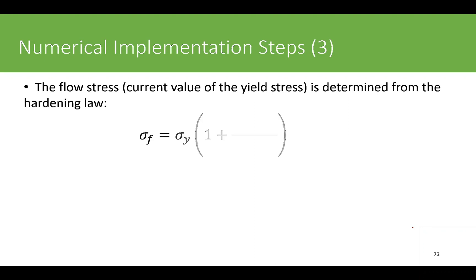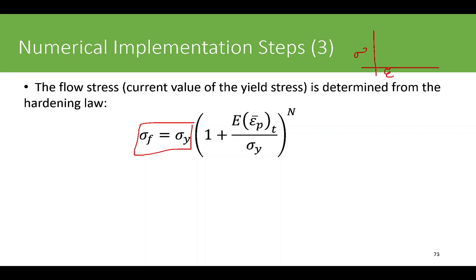The flow stress is determined from the hardening law. In the previous case with no hardening, the flow stress equaled only the yield stress. Now, with hardening, the stress-strain curve shows strain hardening — the material continues to resist deformation after initial yielding at sigma_y. The flow stress is a function of the initial yield strength and the accumulated equivalent plastic strain at previous time t. Here E is Young's modulus, sigma_y is the yield stress, and n is the hardening exponent, which controls the stiffness of the hardening curve.